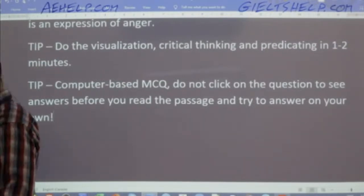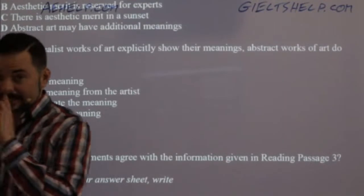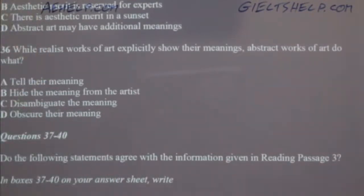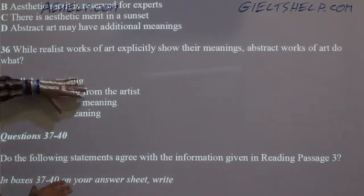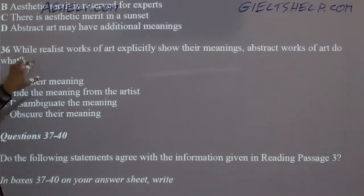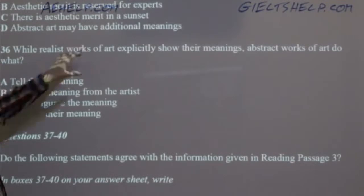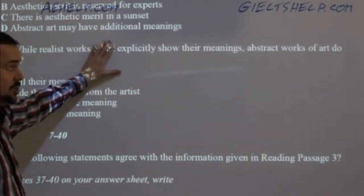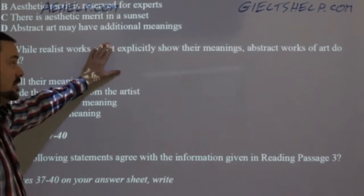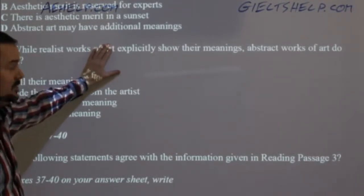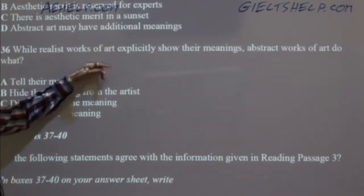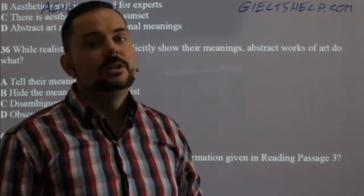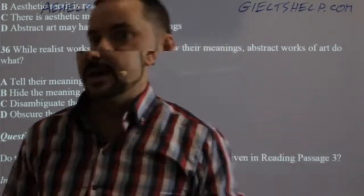What I did — and I think it worked really well because the scores prove it — is I just read the question, read the passage, then read the question again, thought about the answer, and then I clicked on it. It gave me the options, I made my choice, and that worked really, really well to get very high accuracy.